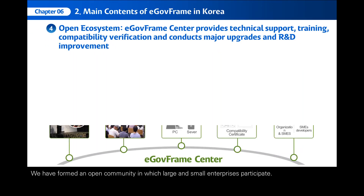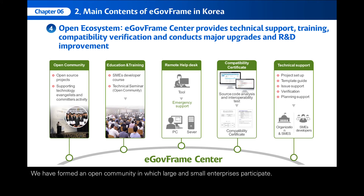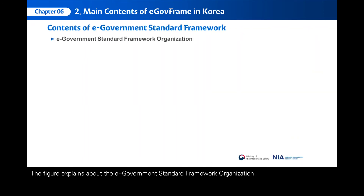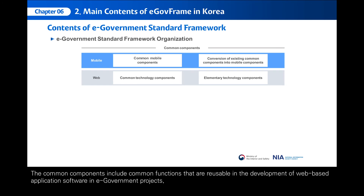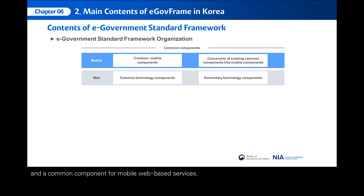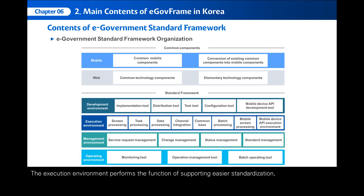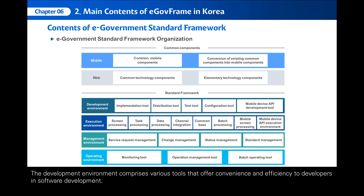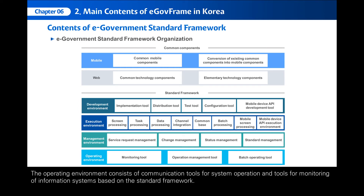The fourth step is open ecosystem. We have formed an open community in which large and small enterprises participate. The main purpose of the open community is to encourage developers to increase the use of E-GovFrame. The figure explains the e-government standard framework organization. The common components include common functions reusable in the development of web-based application software in e-government projects and a common component for mobile web-based services. The execution environment performs the function of supporting easier standardization of screen, business, and data processing during business program development. The development environment comprises various tools that offer convenience and efficiency to developers in software development. The management environment provides the functions of managing technical support requests and application statuses. The operating environment consists of communication tools for system operation and tools for monitoring of information systems based on the standard framework.